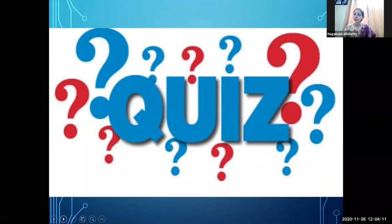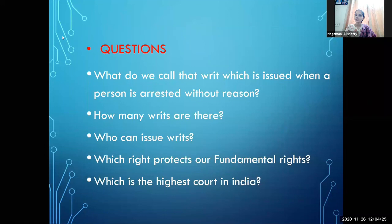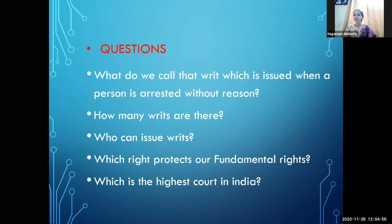It is quiz time! I hope you all understood the topic. Question 1: What do we call the writ which is issued when a person is arrested without reason? The answer is Habeas Corpus. Question 2: How many writs are there in the Constitution? The answer is five writs. Question 3: Who can issue writs? The answer is the Supreme Court and the High Court.